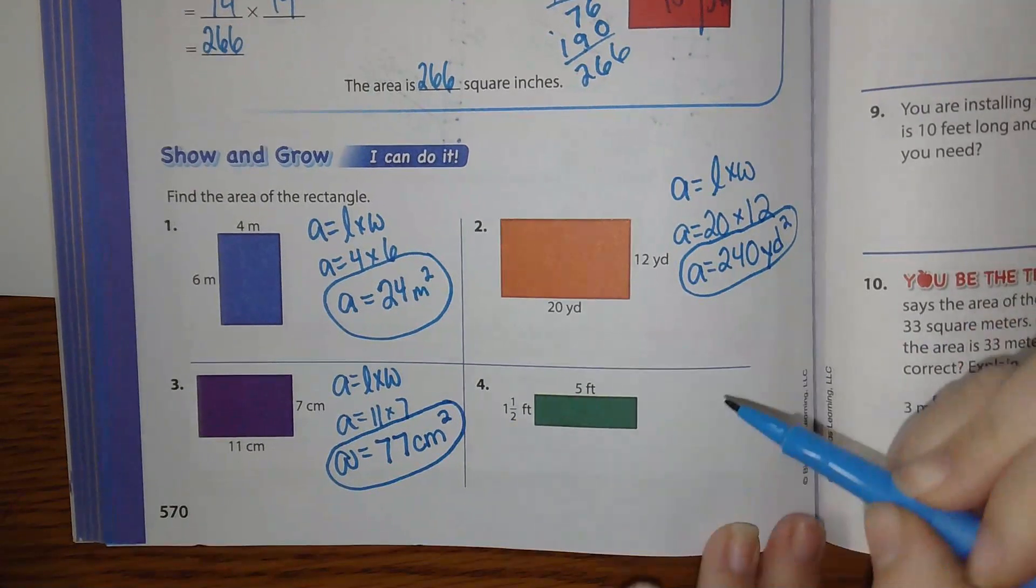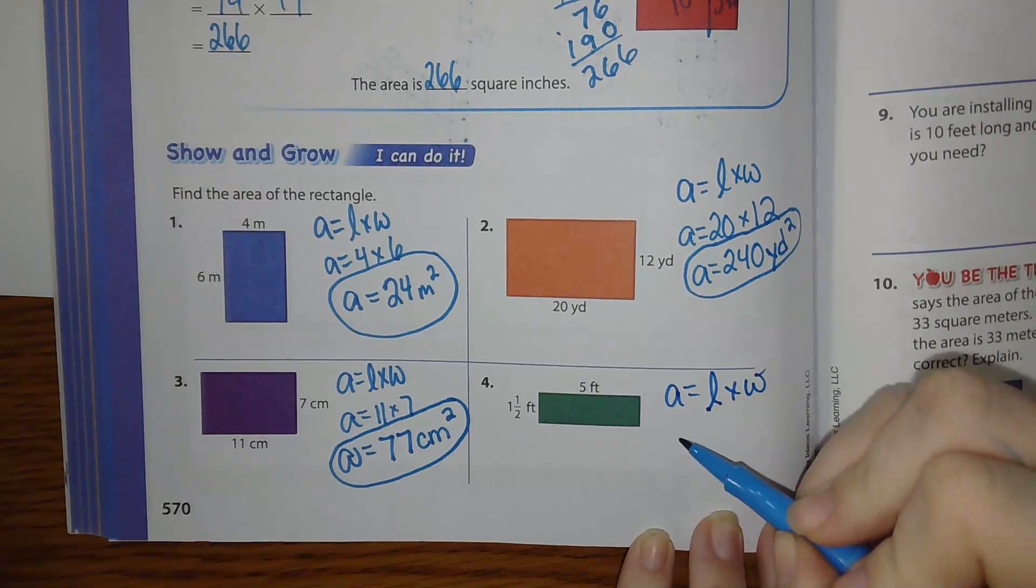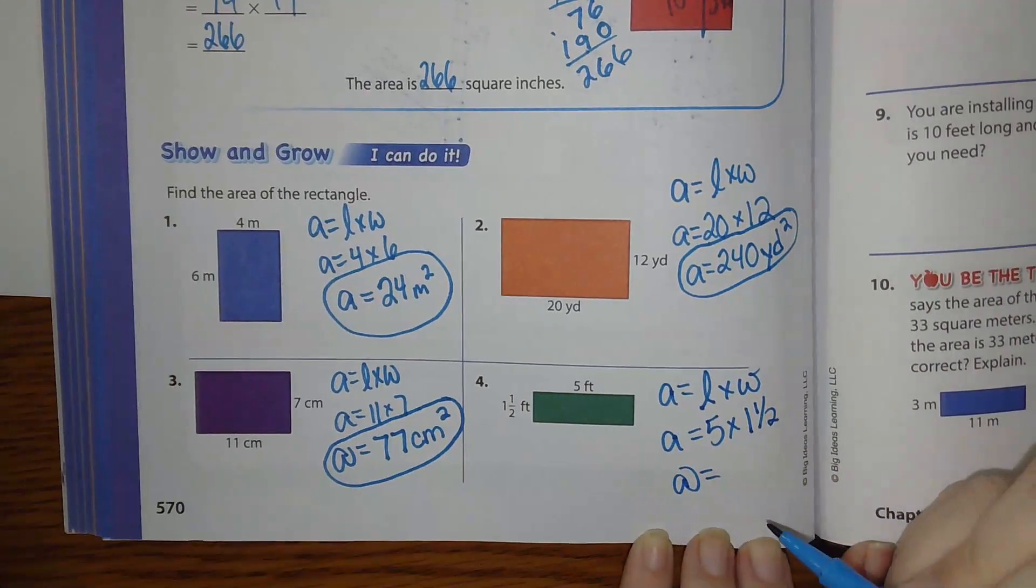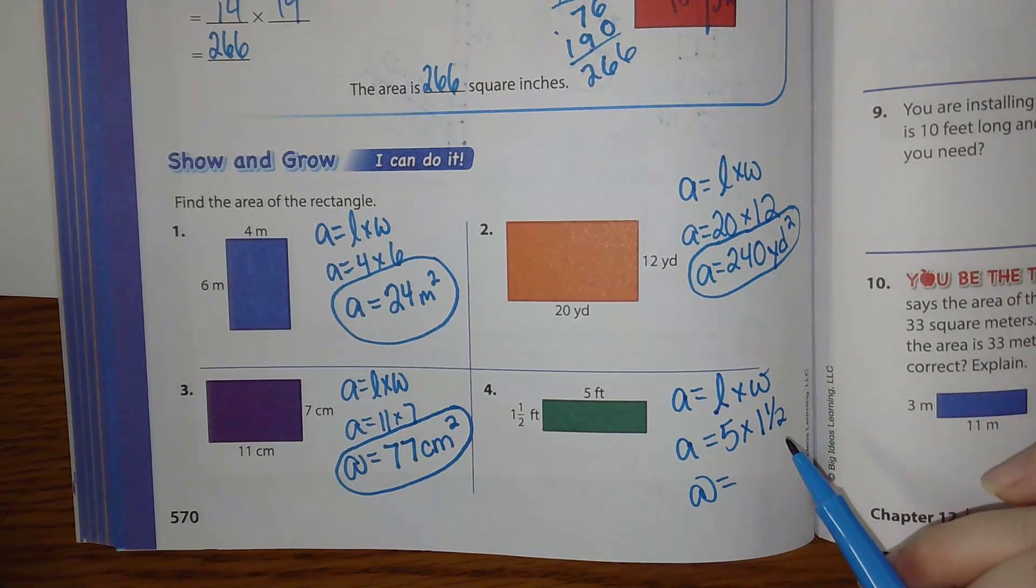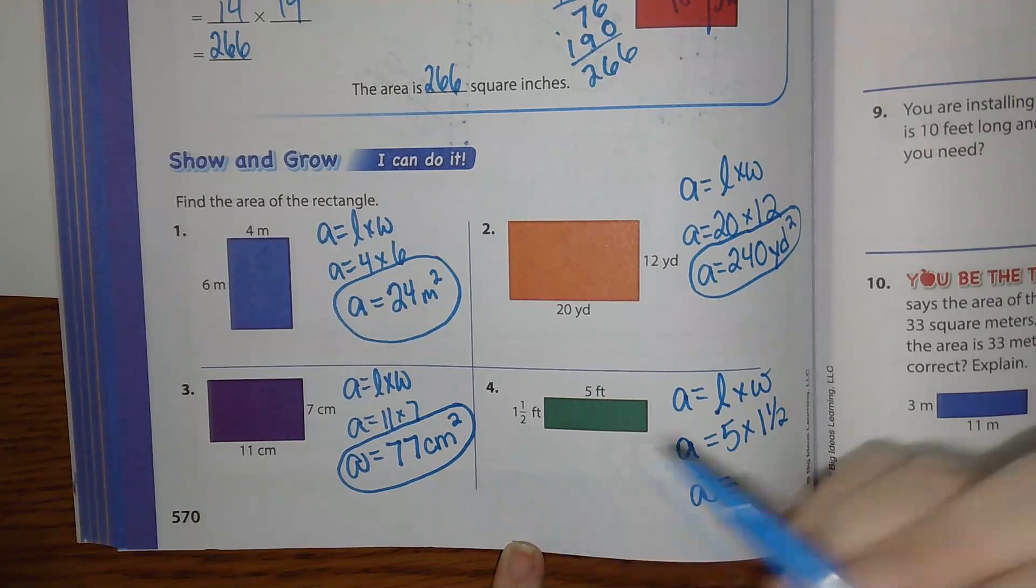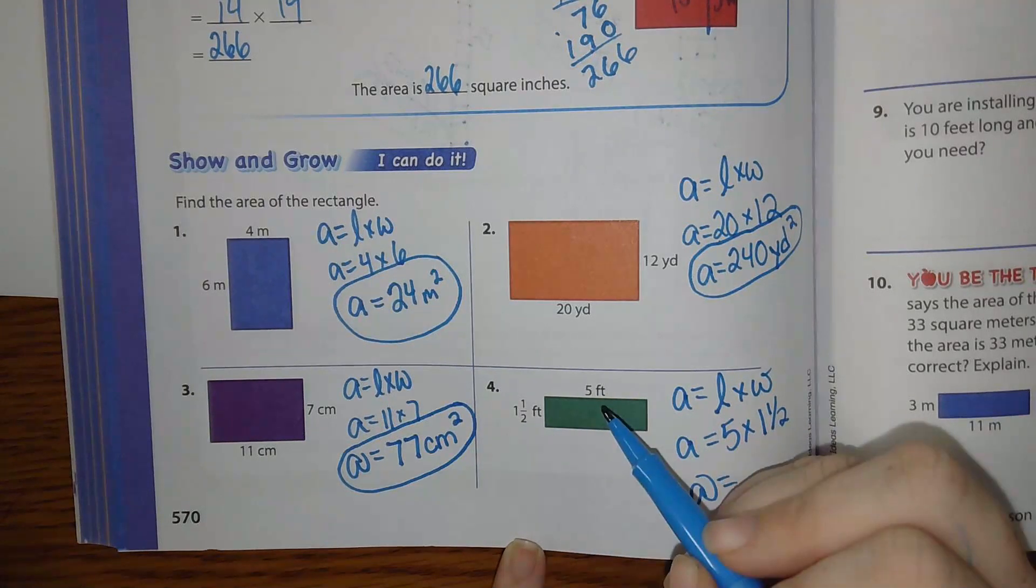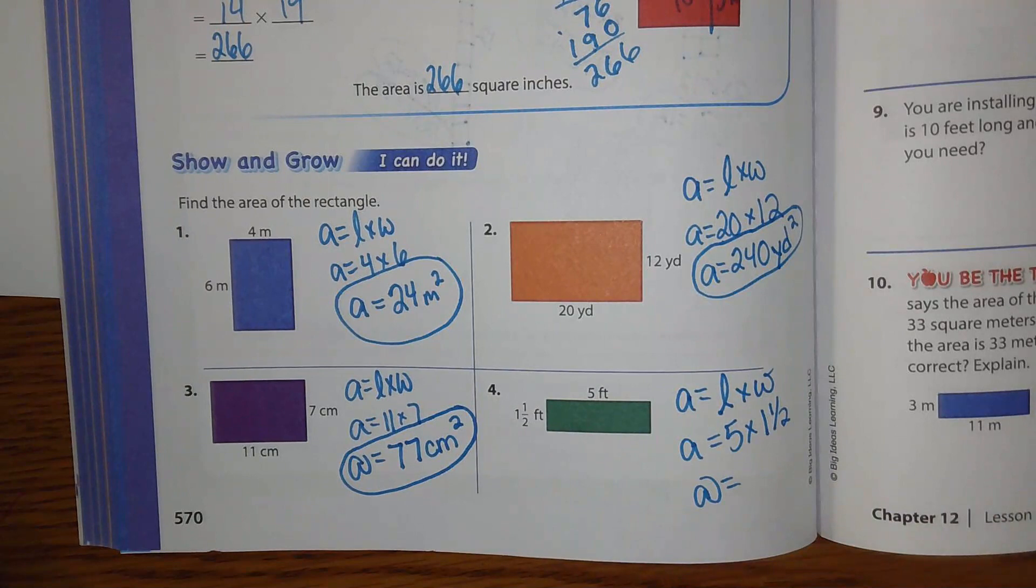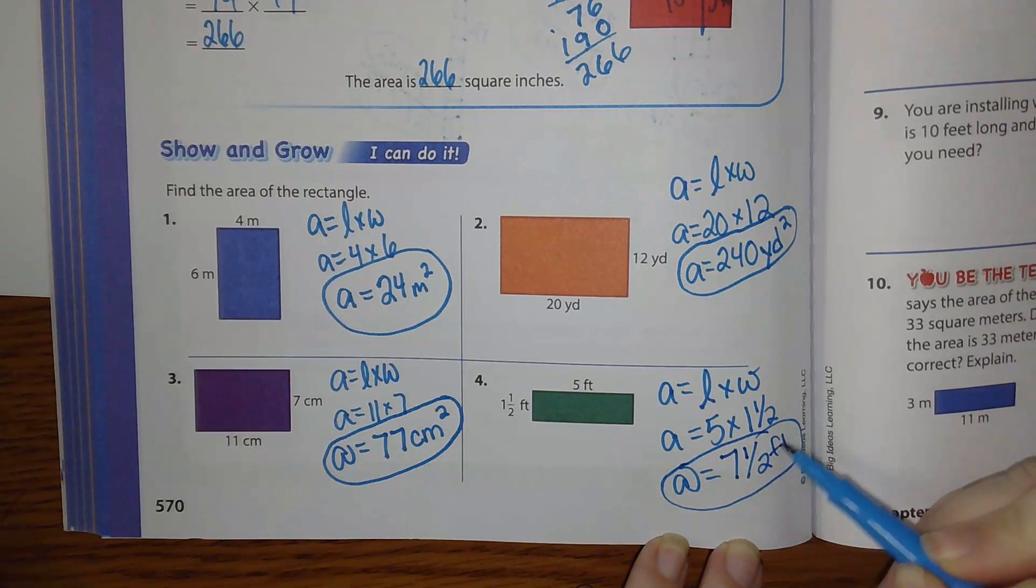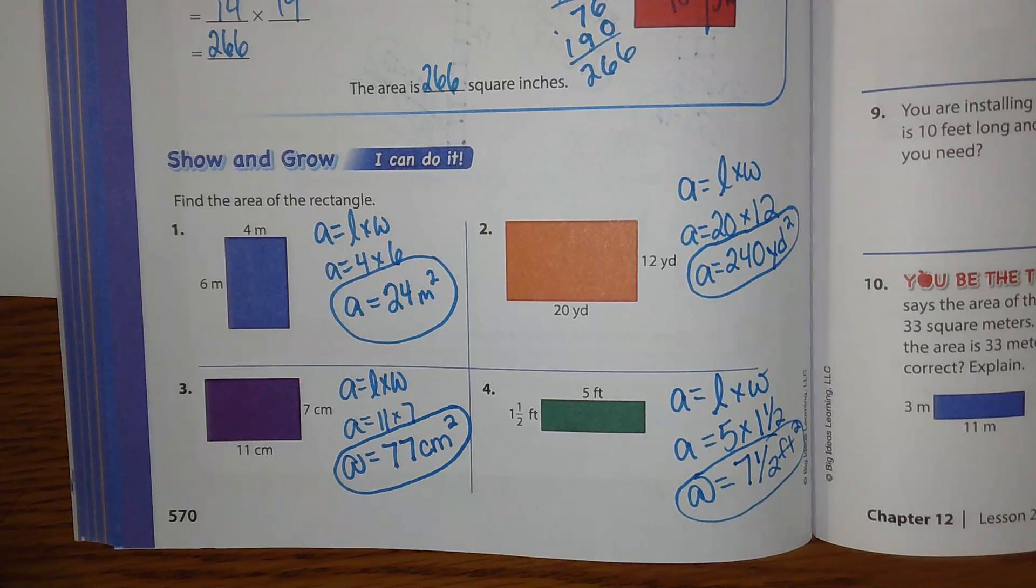Number 4. How do I write my formula? A equals L times W. A equals 5 times 1 and a half. And A equals 5 and a half. Okay, so 5 times 1 and a half. I'm going to work that out over here. Well, 5 times 1 is 5. And half of 5 is 2 and a half. And 5 plus 2 and a half is 7 and a half. So area equals 7 and a half feet squared. Then I'm going to pause the video for a minute and give you guys a chance to work on 5 through 8. And then we're going to go over them together.